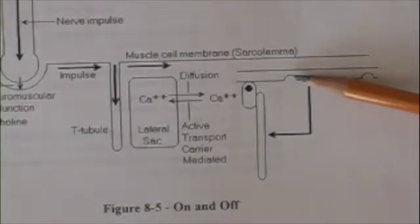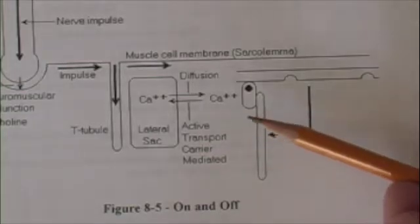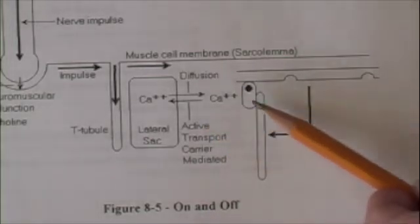After this happens, the muscle has to be turned off. How is the muscle contraction turned off? The calcium has to be removed from the troponin. To do that, calcium is pumped back into the lateral sacs.